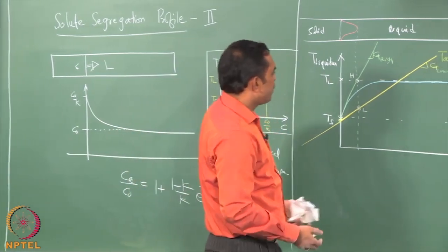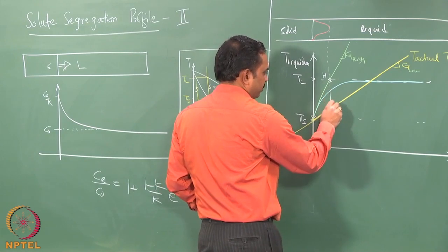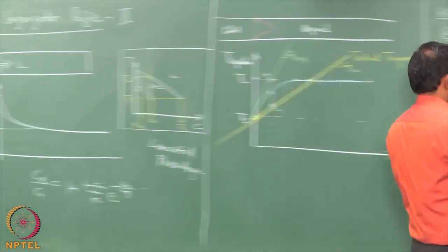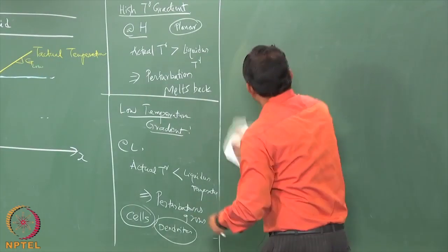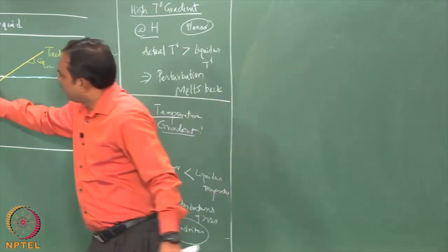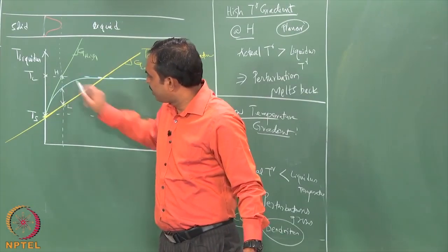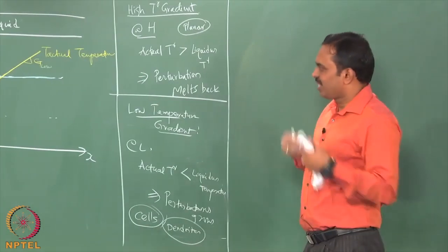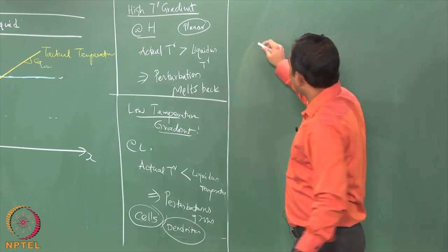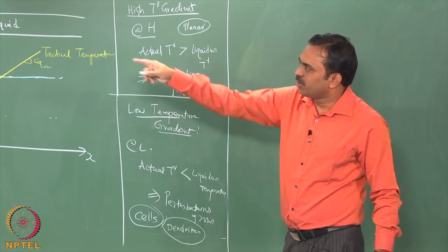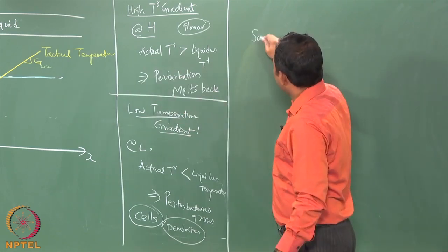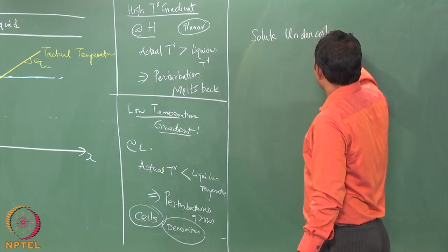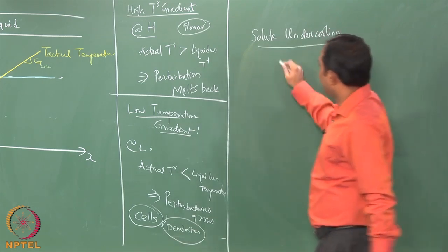We can inspect this height difference between the actual temperature and the liquidus temperature. A temperature below the liquidus where solidification is enhanced or possible is called undercooling. Because this comes from the solute segregation profile, it is called solute undercooling or solutal undercooling — this is ΔT.